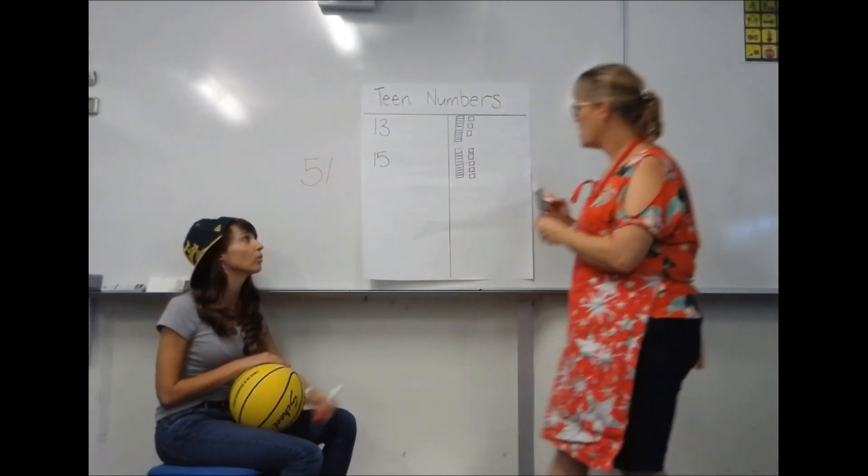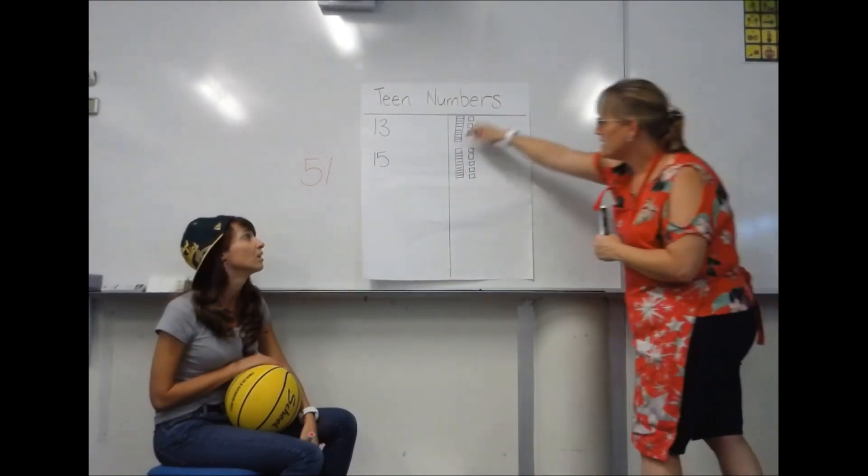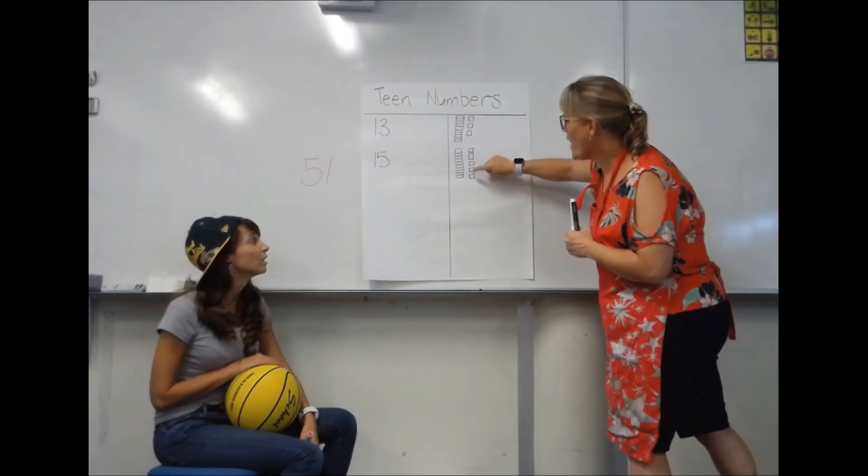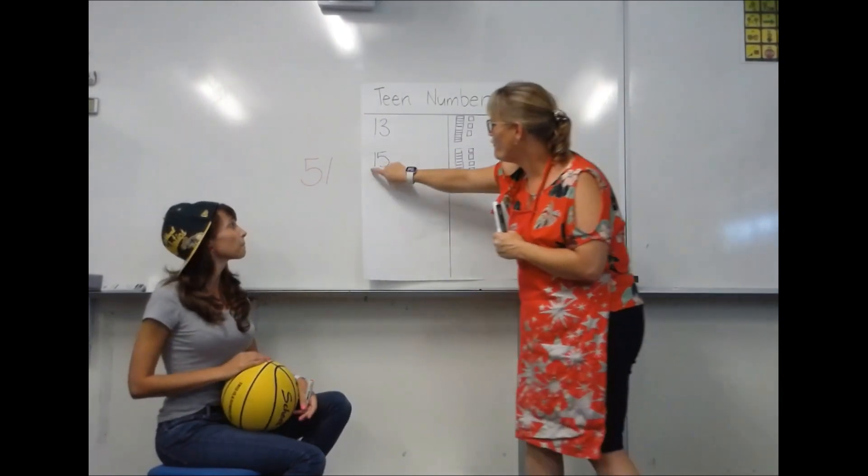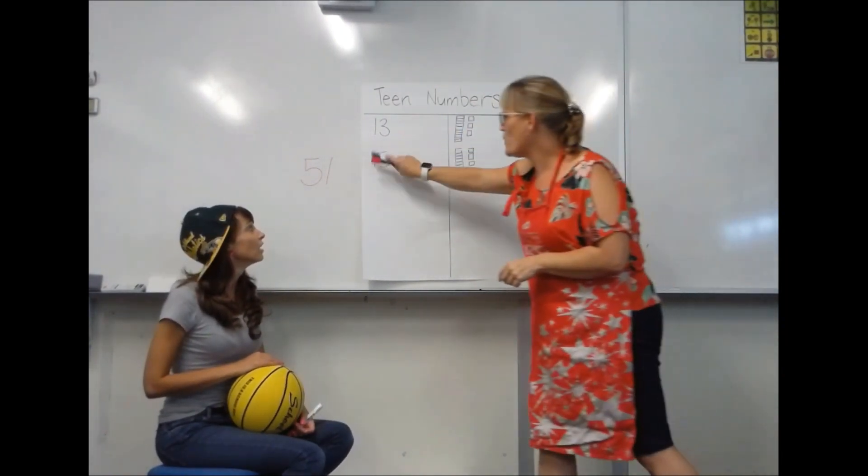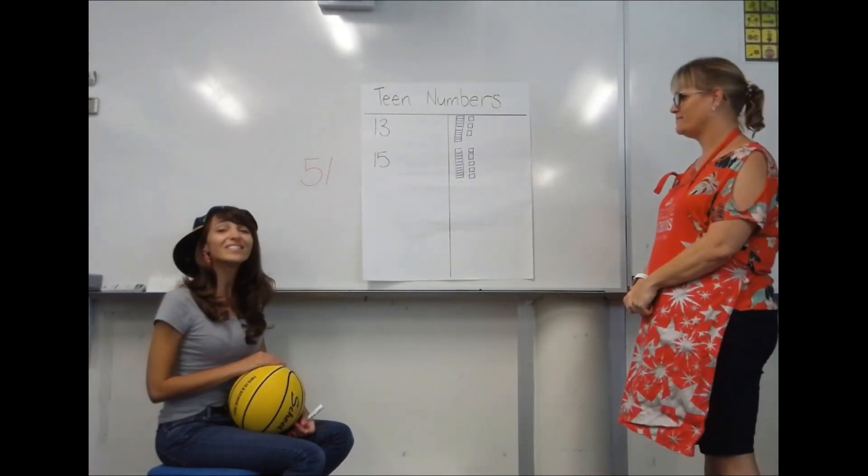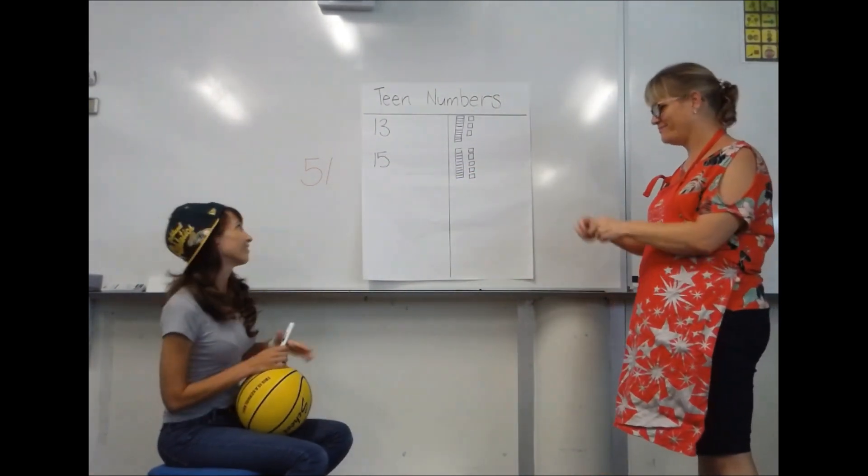Mum, you need to talk me through it. I don't understand what you're doing. Okay. Teen. One, two, three, four, five. Fifteen. Bossy one. Oh, because I'm a teenager and I come first.